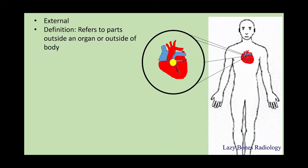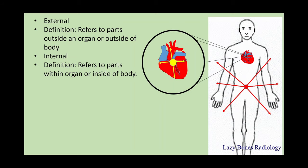External refers to parts outside of an organ or outside of the body. Here's the heart — anything outside of that organ has a more external relationship, and anything outside of the body is more external. Internal is the opposite; it refers to parts within an organ or within the body. As you go inside towards the center, you have a more internal relationship.